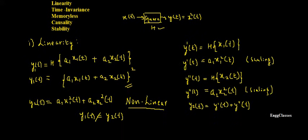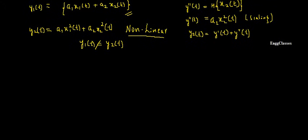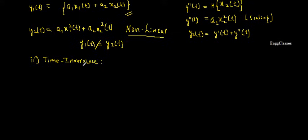Next, we move to the second property: time invariance. Time invariance means the system must be invariant to time — it should not vary with time. The definition states that a shift in the input must lead to an identical time shift in the output.